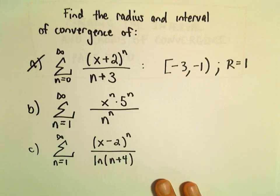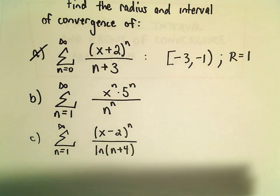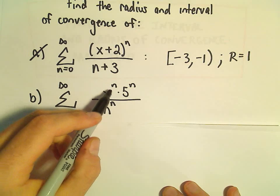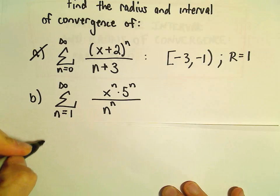Alright, here we're going to look at another example of finding the radius and interval of convergence. So part b, we've got the series from 1 to infinity, x to the n times 5 to the n over n raised to the n.